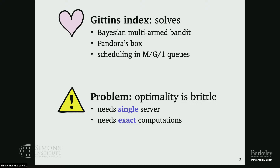Also, all of these optimality proofs assume you've implemented Gittins perfectly with exact computations. It turns out the Gittins index is a number — sort of how good is this arm, how good is this job to serve. What if you don't exactly compute that number, because it could be hard to compute? The optimality proofs don't give us a good idea.